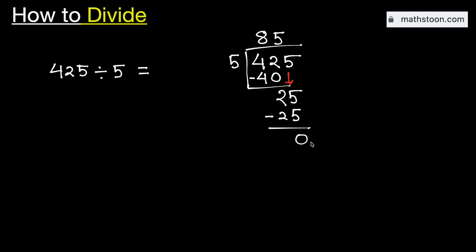As we have no number to bring down here and got the number 0, so we will stop. Therefore, 425 divided by 5 is equal to 85. And this is our final answer.